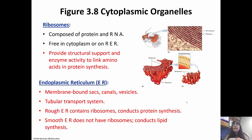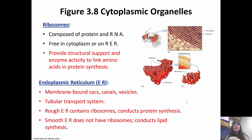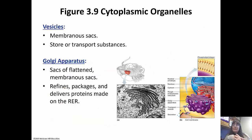The endoplasmic reticulum comes in two types: rough ER and smooth ER, named because of their appearance. Rough ER has ribosomes attached to it, giving it a studded or rough-looking appearance, and it conducts protein synthesis. Smooth ER does not have ribosomes attached, so it has a smooth appearance, and it conducts lipid synthesis and helps with detox.